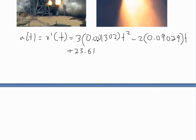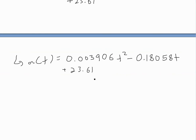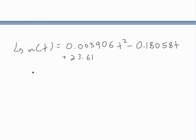.61. Multiplying this out using a calculator, a(t) equals 0.003906t² - 0.18058t + 23.61. So now we can apply the